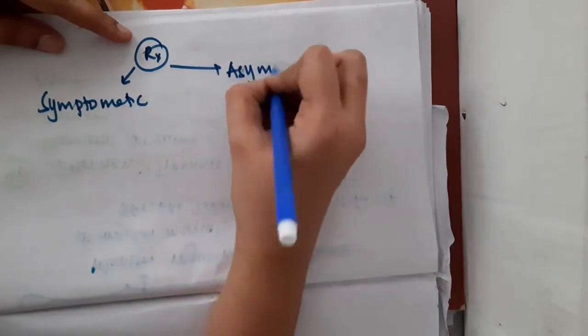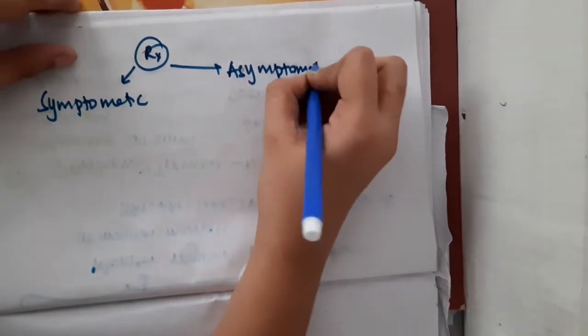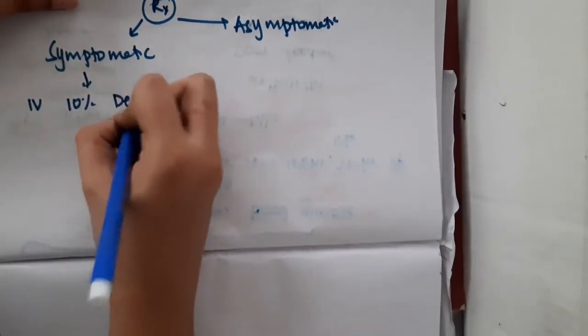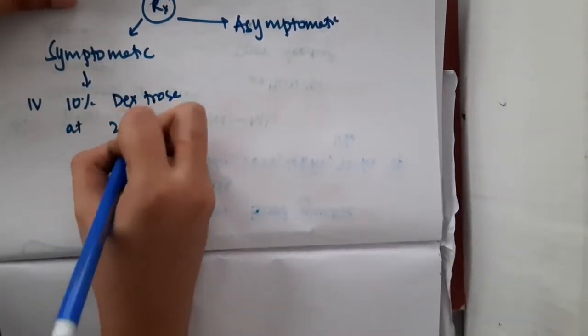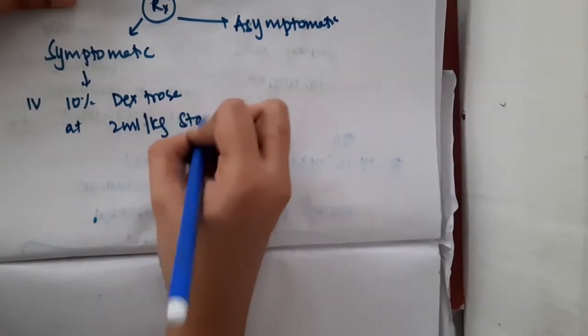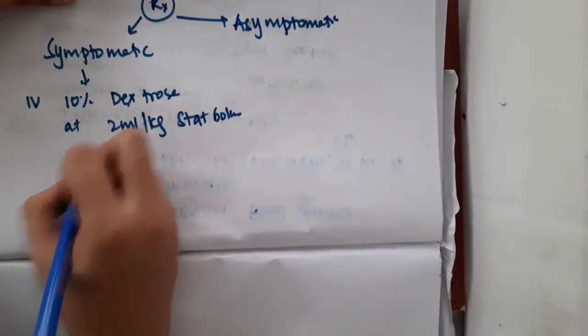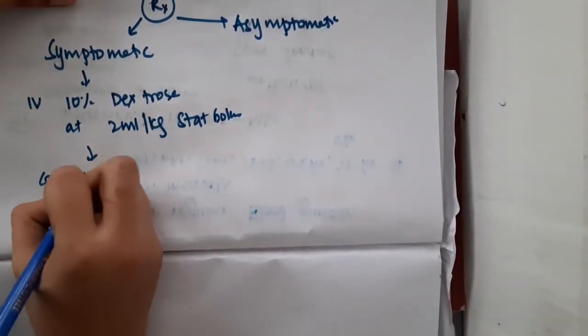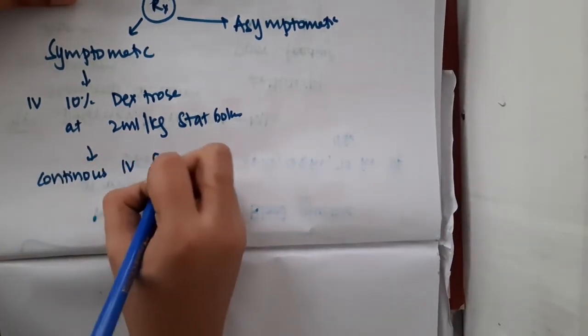How are you going to treat this condition? Treatment is dependent upon the symptoms, whether the baby is symptomatic or asymptomatic. If the baby is symptomatic, then you should give IV 10% dextrose at 2 milliliters per kilogram stat bolus.